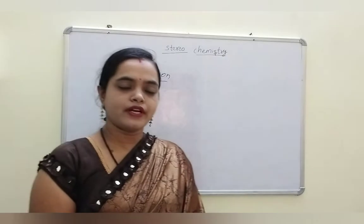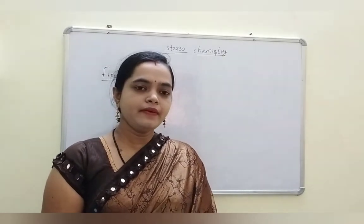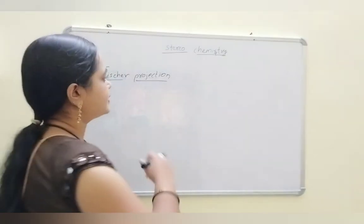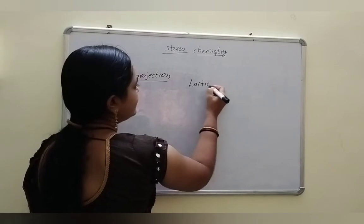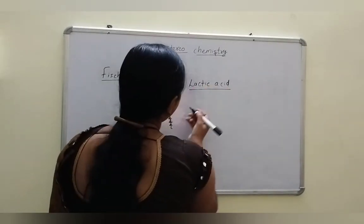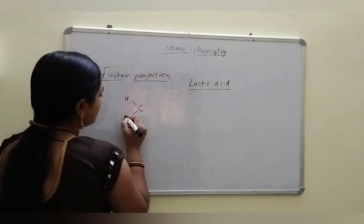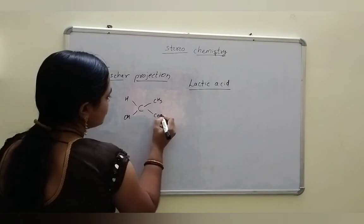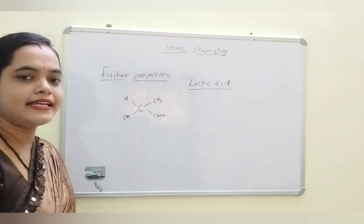The stereo aspects of organic chemistry are well understood by the three tangential models. Let's take an example — lactic acid. The lactic acid is CH(OH)(CH3)(COOH). This is the formula of lactic acid.